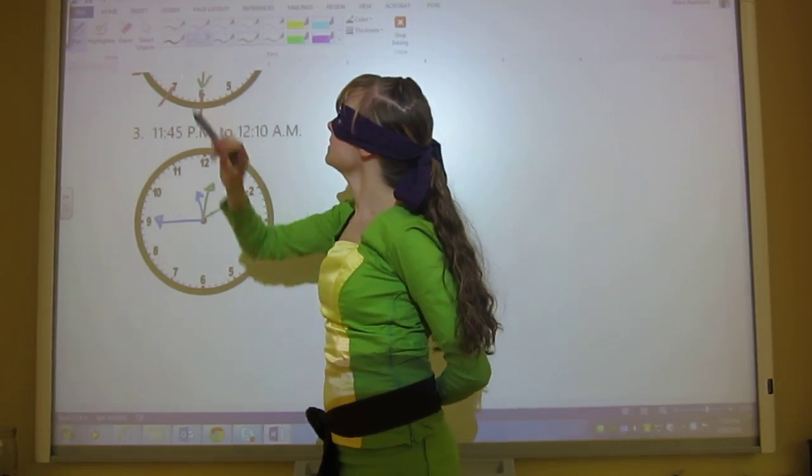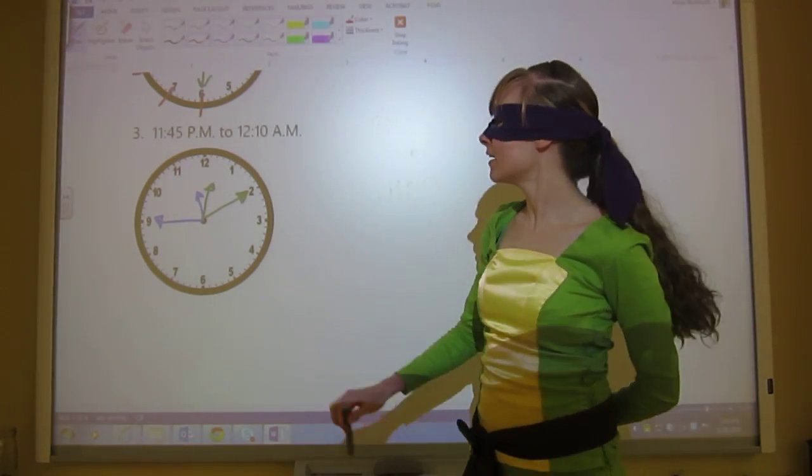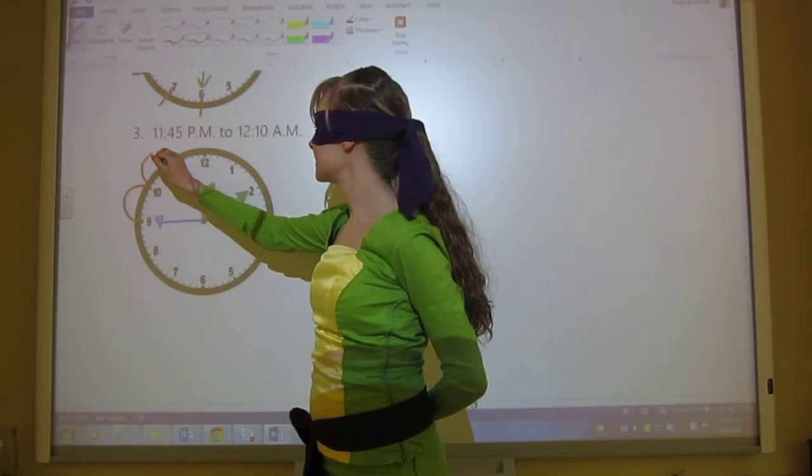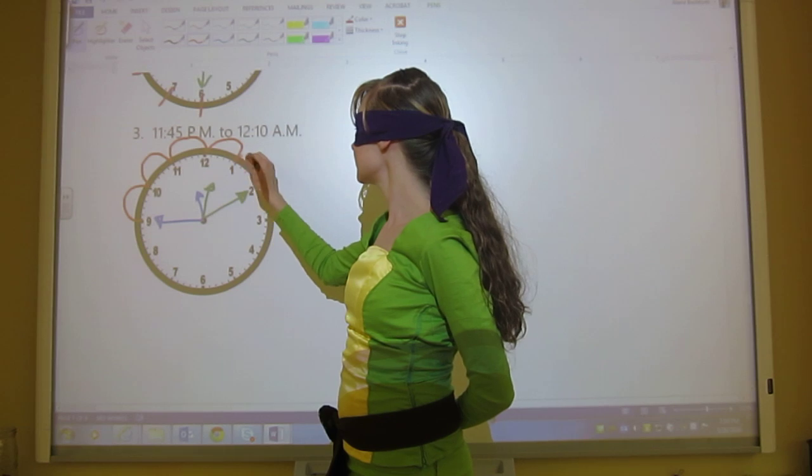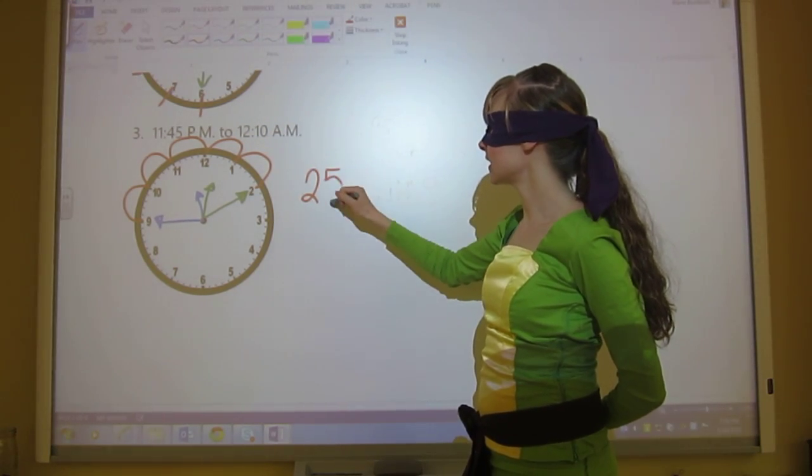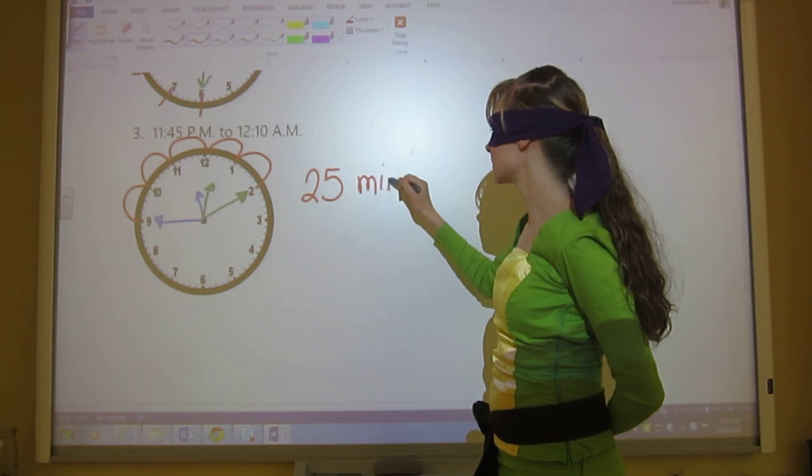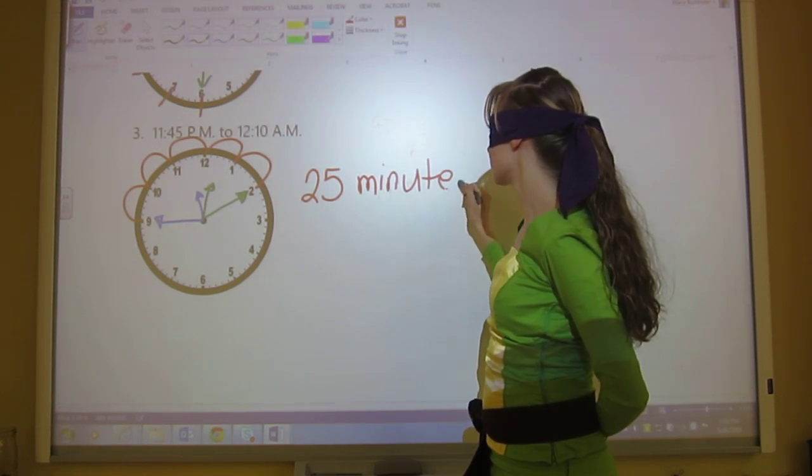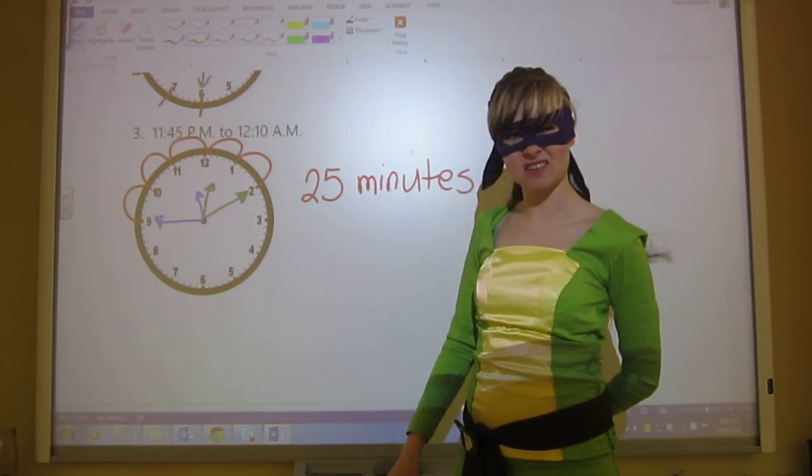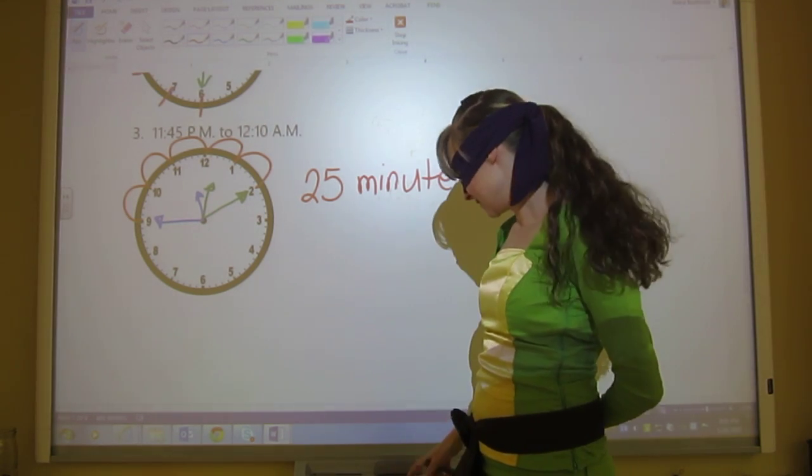And then all I need to do is skip count by five. So I've got from here to here is 5, 10, 15, 20, 25. So this is 25 minutes. If you went all the way around, I could make like a clock flower. Isn't that fun?